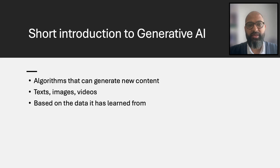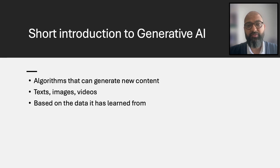Let's start by understanding what generative AI is. Generative AI refers to algorithms that can generate new content such as text, images and video, based on the data it has learned from. Examples of generative AI tools are ChatGPT, Gemini and Copilot.